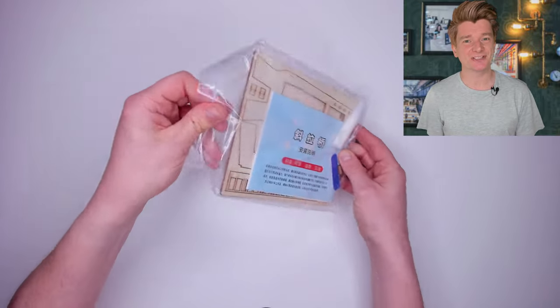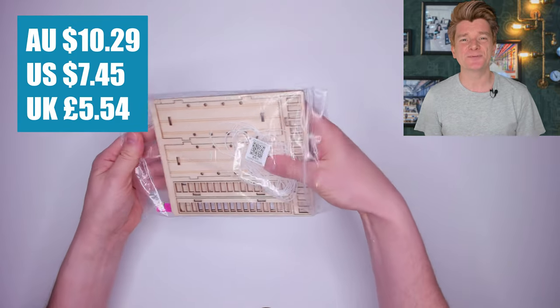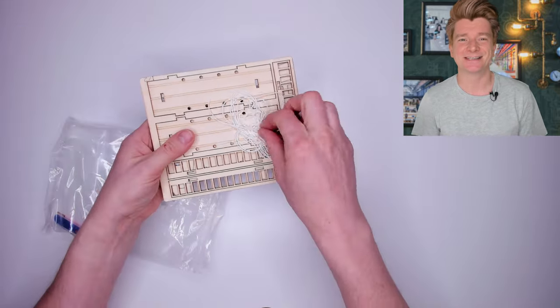First up is a wooden suspension bridge kit that I got from Amazon for $10.29. It's super simple but also super cheap, let's see what's inside.